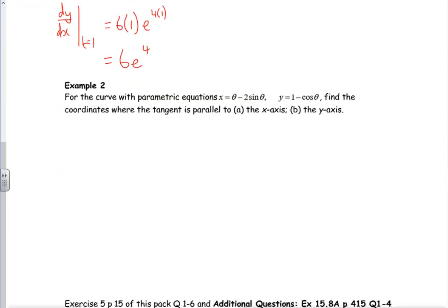There we go. Right, let's have a look at example two. I reckon this one's going to be a big one. So it says for the curve, I've got my equations here. Looks like a sine squared plus cos squared one if it's Cartesian.